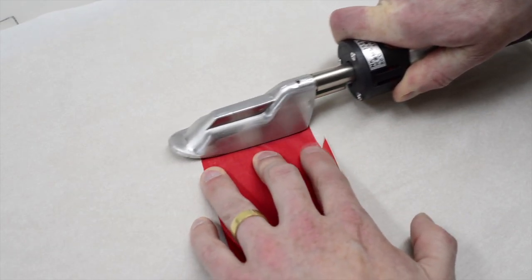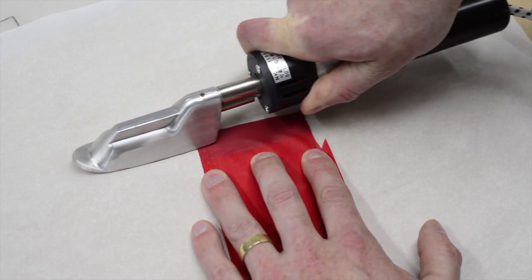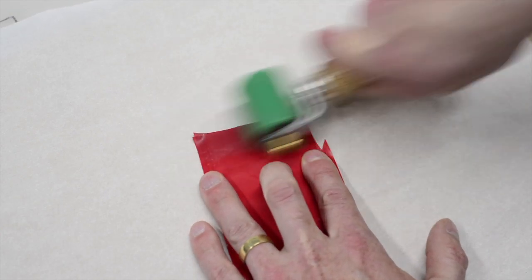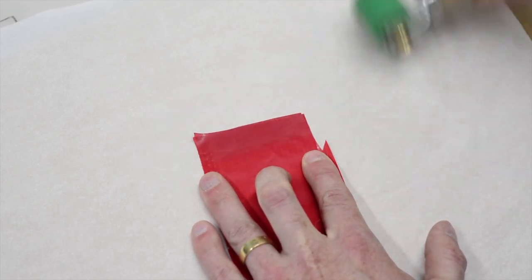Once you've got the iron's temperature set correctly, practice on scraps of fabric until you have a good feel for how long it takes to get a good weld, and only then should you start assembling your packraft.